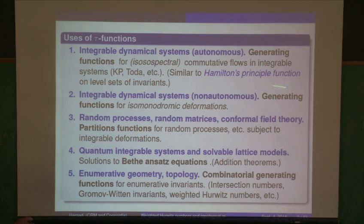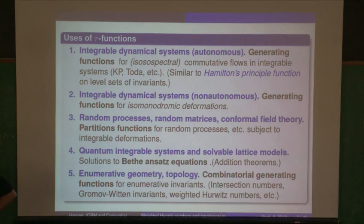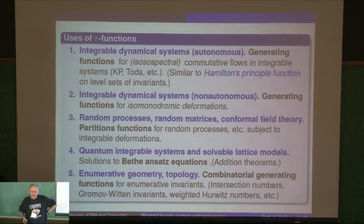For non-autonomous systems, it's also a generating function in the way that we saw for the Painlevé systems, but not quite so clear how it's related to canonical transformations. Isomonodromic systems are sort of non-autonomous deformations of isospectral systems — and that's how I met Craig, where that coincidence came up. They appear in random processes, as many here know, as partition functions in various senses.